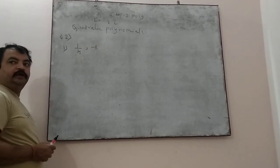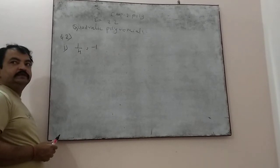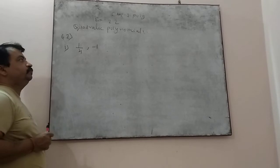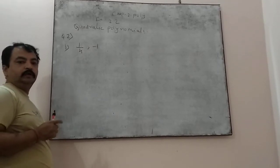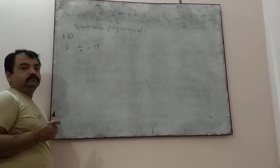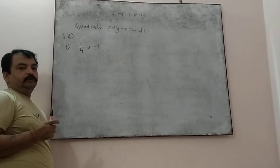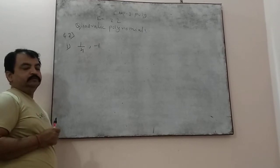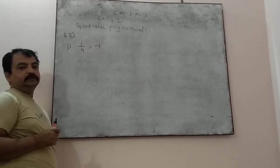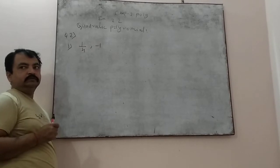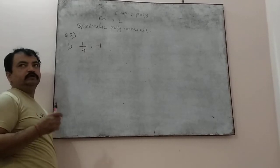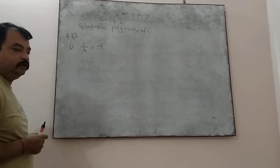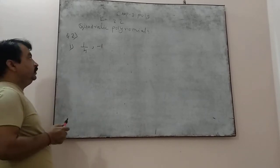Okay children, in my previous lecture I discussed question number 1, where a quadratic polynomial was given and we found the number of zeros of the quadratic polynomial.